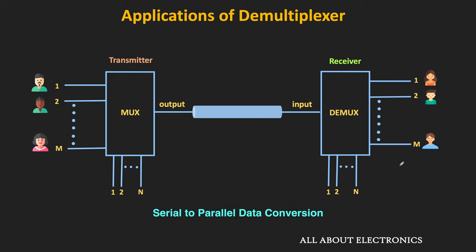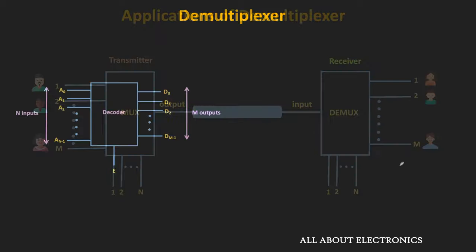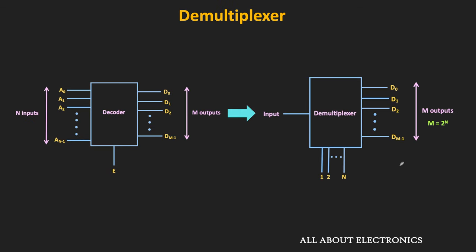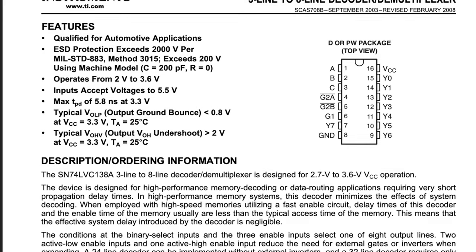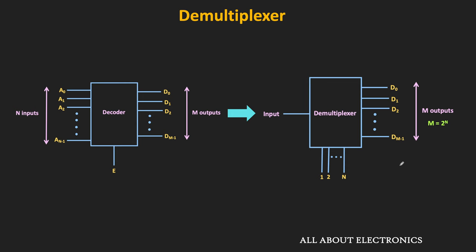Apart from TDM, the demultiplexer can also be used for serial-to-parallel conversion. Moreover, it can be used in all applications where a decoder is used, because the logic circuit of the demultiplexer is very similar to the decoder. With a small change in the decoder circuit, it can function as a demultiplexer — which is why many decoder ICs are labeled as decoder/demultiplexer ICs, and the demultiplexer can be used to implement different Boolean functions.